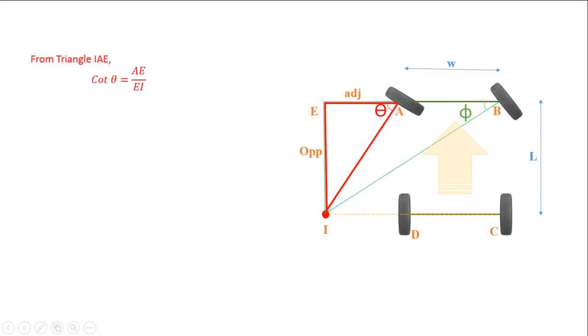From triangle IAE, cot theta is equal to adjacent side divided by opposite side. Then EI is equal to L. Therefore, cot theta is equal to AE divided by L.